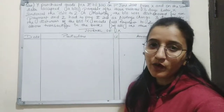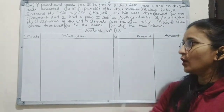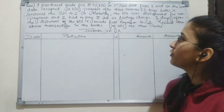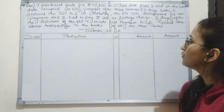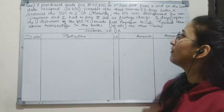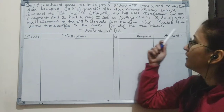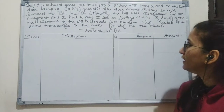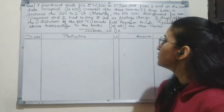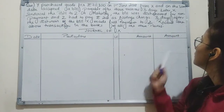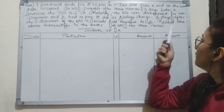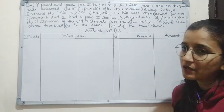Here is a practical question based on the third case of dishonor where the bill endorsed to the third party is dishonored. Y purchased goods for Rs. 70,800 on 1st June 2018 from X, and on the same date accepted a bill payable after 3 months. Three days later, X endorsed the bill to Z. On maturity, the bill was dishonored for non-payment and Z had to pay Rs. 200 as noting charges. Three days after the dishonor of the bill, X made full payment to Z. Record the above transactions in the books of all three parties.